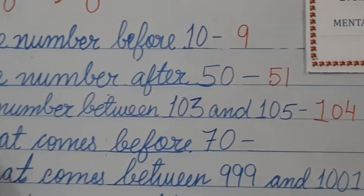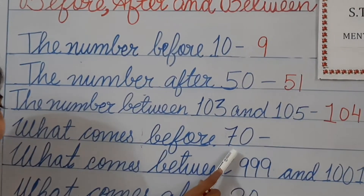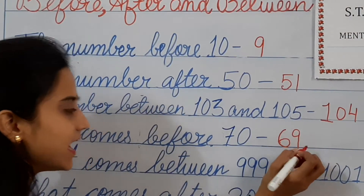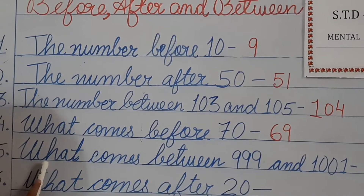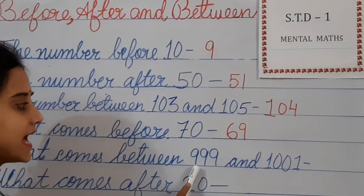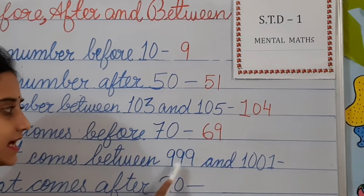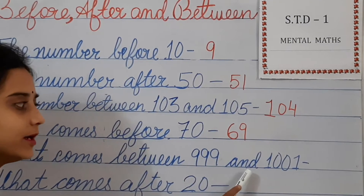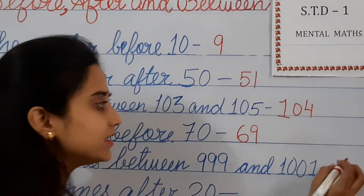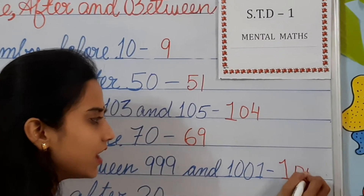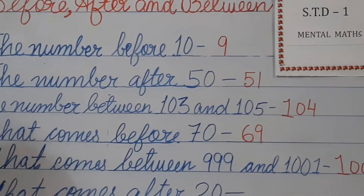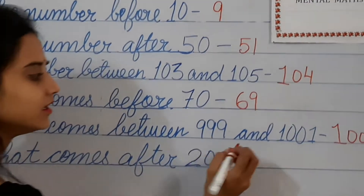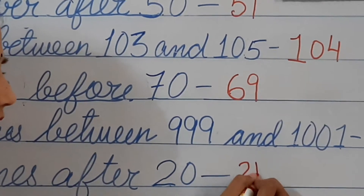Next, what comes before 70? 69. Number 5: what comes between 999 and 1001? The number between these two numbers will be 1000. Next, what comes after 20? Number 21.